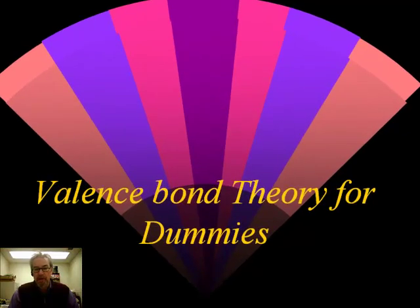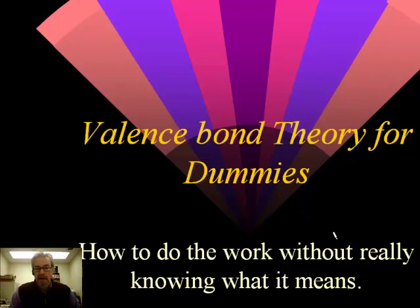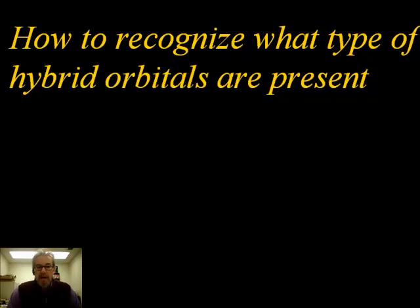This is a supplementary video called 'Valence Bond Theory for Dummies.' Here I'll show you how to identify what kind of hybridization is present and what kinds of bonds are present without deeply understanding valence bond theory. As you do more problems, the understanding will come — sometimes you fake it until you make it. Here's how we can recognize what type of hybrid orbitals are present.